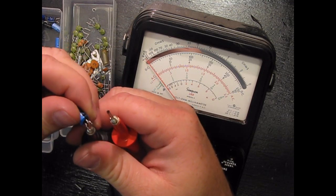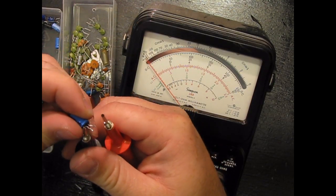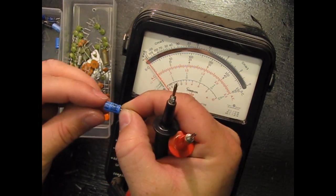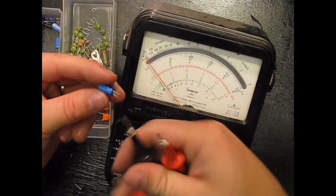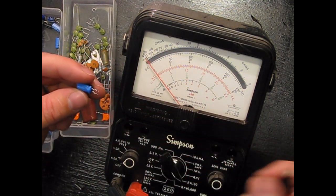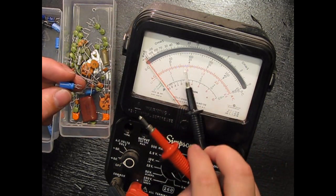See it jump? Turn the leads around - it jumps. Now it's really hard to test them if your capacitor is in a circuit. It might not read just like that. And here again, an analog meter is a lot nicer for testing a capacitor than a digital meter.